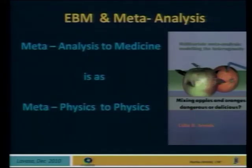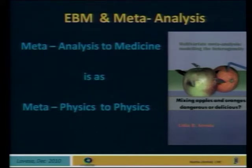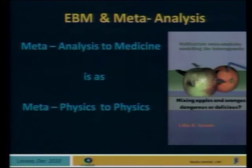So what is evidence-based medicine and meta-analysis in our case? We are really speaking about the age, the end of the Gauss curve. Somebody told me that meta-analysis to medicine is like metaphysics to physics. Multivariate meta-analysis modeling models the heterogeneity, because this small group is very heterogeneous and very difficult — it's a difficult patient to treat. So how are we mixing apples and oranges? Is it dangerous? Is it delicious? We will see. We start the journey now.